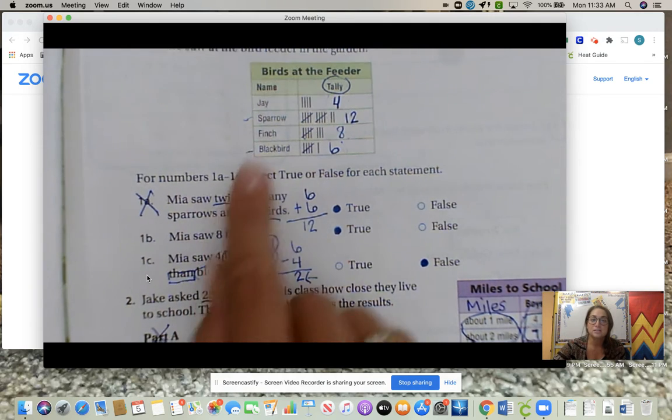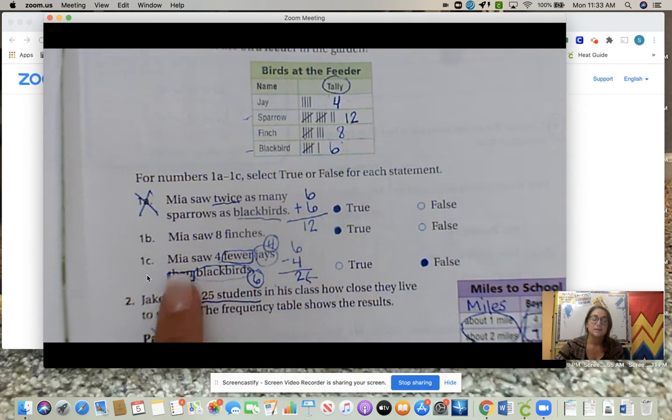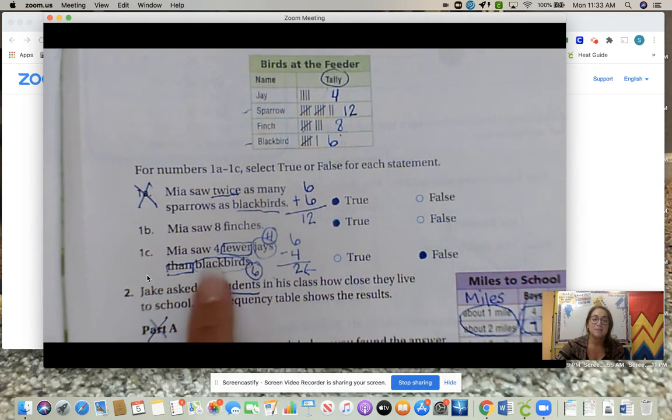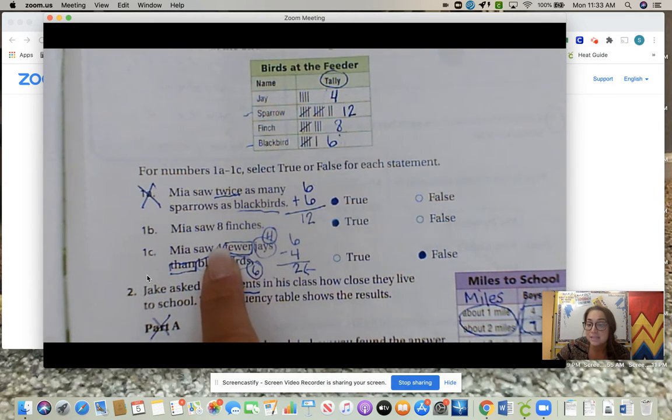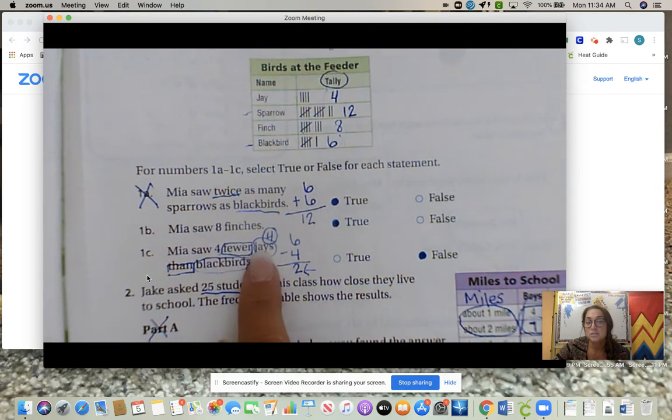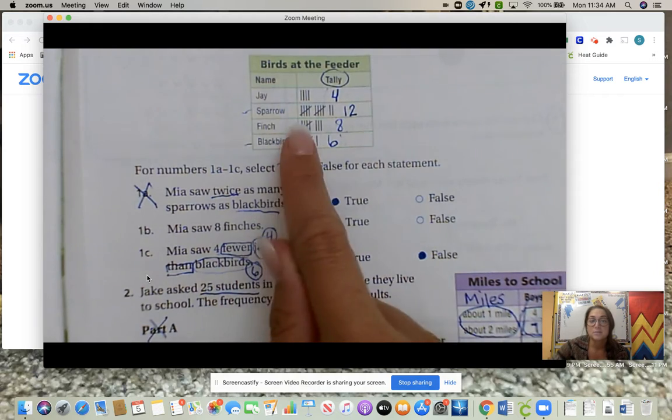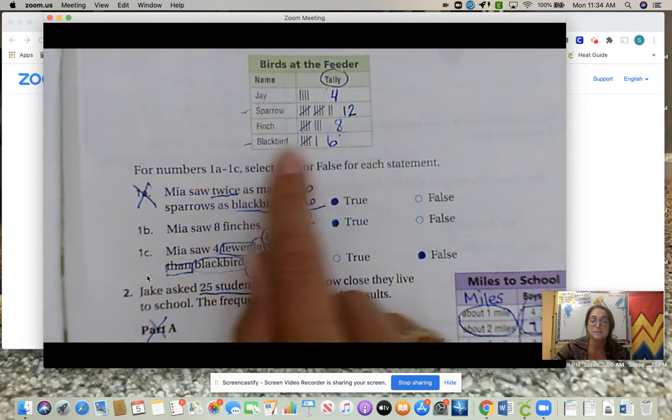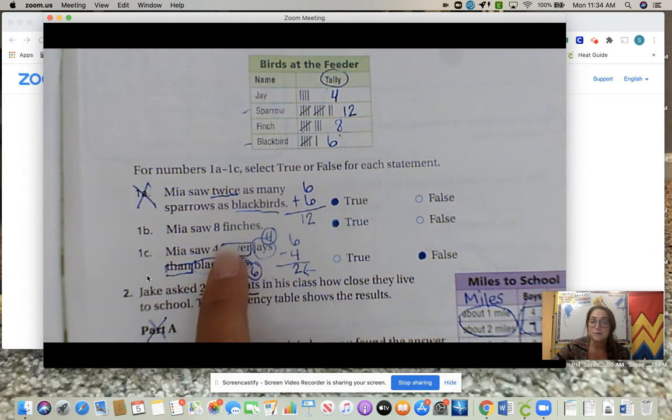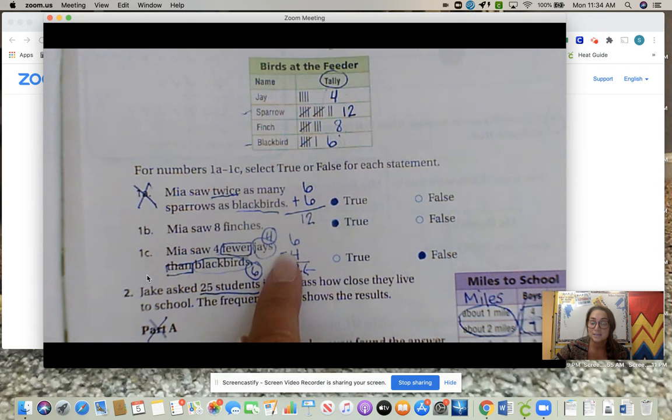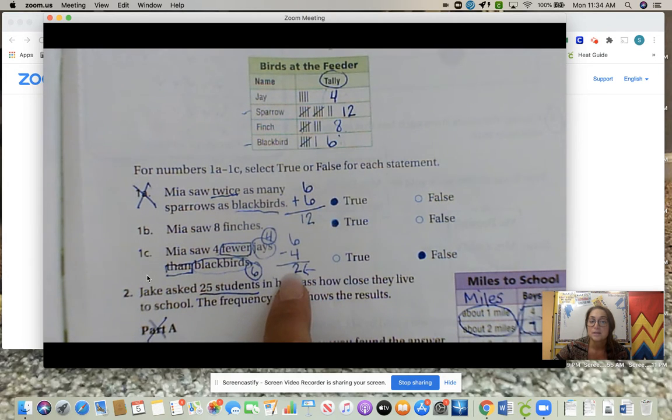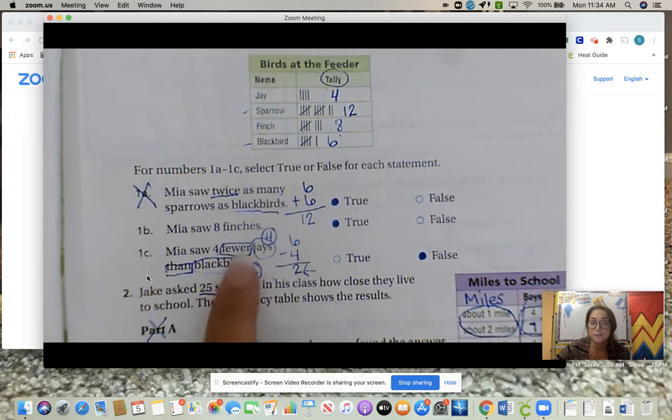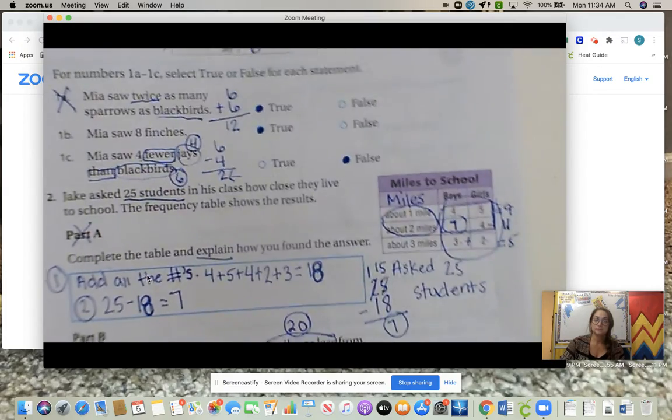1b: Mia saw eight finches. Let's go up to finch. True. She saw eight. 1c: Mia saw four fewer jays than blackbirds. We need to find our key numbers. Four is their answer, so we have to see if it's true or false. We circle jays and blackbirds. Jays we have four, blackbirds there's six. Our math verbs are fewer and than, that means to subtract. We set up our math problem: six subtract four, then we solve: two. It's actually two fewer jays than blackbirds, not four. So it is false.